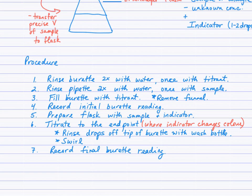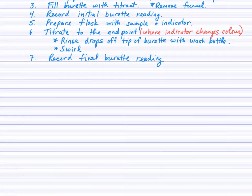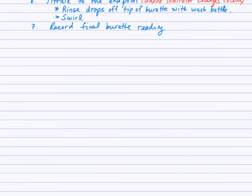Complete the titration to the end point — the point where the indicator changes colour — making sure to swirl the flask and rinse drops off the tip of the burette with the wash bottle as you go. Record the final burette reading in your observation table. I've posted some videos for you to watch someone perform a titration, and you can look at photographs and steps in your textbook. I'll also demonstrate in class.